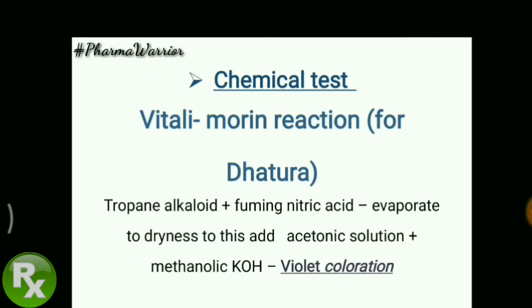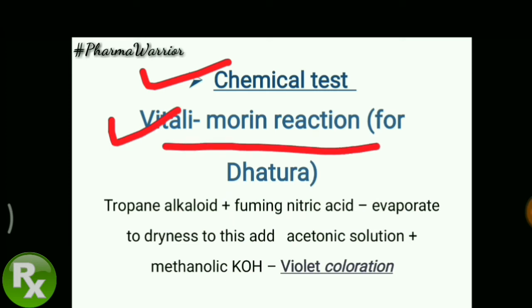Now the chemical test: the Vitali-Morin test. The Vitali-Morin test is used for tropane alkaloids. Since Dhatura also comes under tropane alkaloids, the Vitali-Morin test is applied to it. In this test, a characteristic reaction is observed to identify the presence of tropane alkaloids.